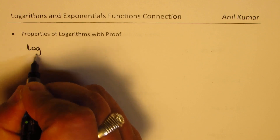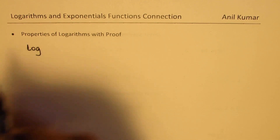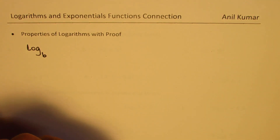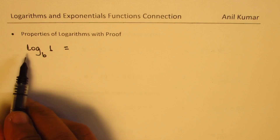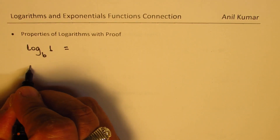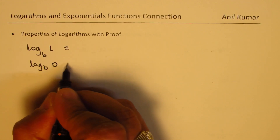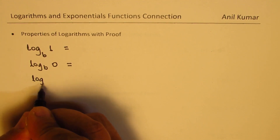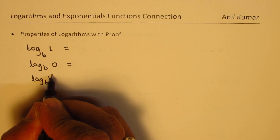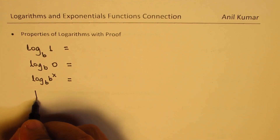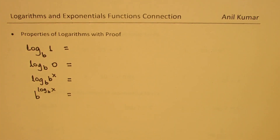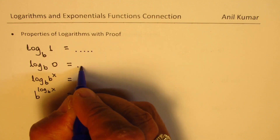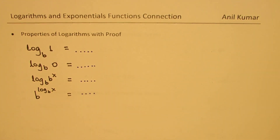When we talk about properties of logarithms, there are a few common things to consider. What is the value of log to the base b of 1? What should be log to the base b of 0? What could be log to the base b of b to the power of x? And what is b to the power of log to the base b of x? I would like you to pause the video and answer these. We will go through derivations of the proof.